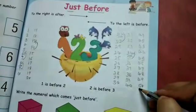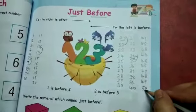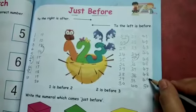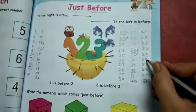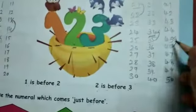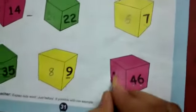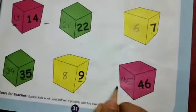46. 41 to 50 ki line mein 46 aata hai. Check karo ho, count reverse counting karenge - 50, 49, 48, 47, 46. 46 before number is 45. Write down 45.